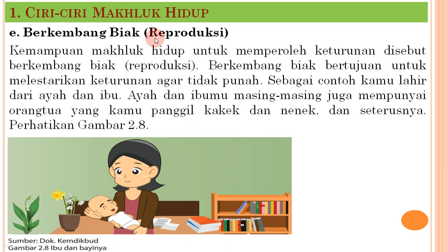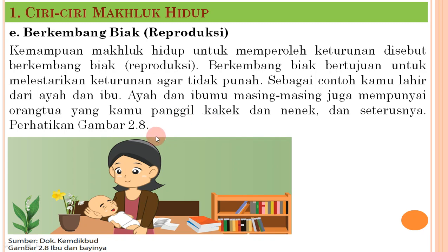Ciri selanjutnya adalah berkembang biak atau reproduksi. Kemampuan makhluk hidup untuk memperoleh keturunan disebut berkembang biak atau reproduksi, tujuannya untuk melestarikan keturunan agar tidak punah. Sebagai contoh, kita lahir dari ayah dan ibu, yang masing-masing juga mempunyai orang tua yang kita panggil kakek dan nenek, dan seterusnya.